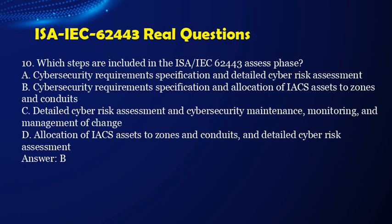Question 10. Which steps are included in the ISA IEC 62443 assess phase? a. Cyber security requirements specification and detailed cyber risk assessment. b. Cyber security requirements specification and allocation of IACS assets to zones and conduits. c. Detailed cyber risk assessment and cyber security maintenance, monitoring, and management of change. d. Allocation of IACS assets to zones and conduits and detailed cyber risk assessment. Answer: b.